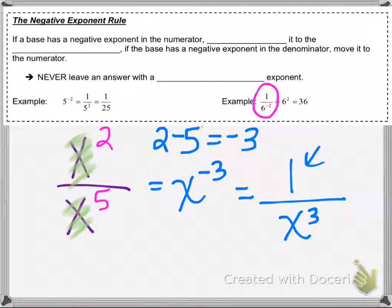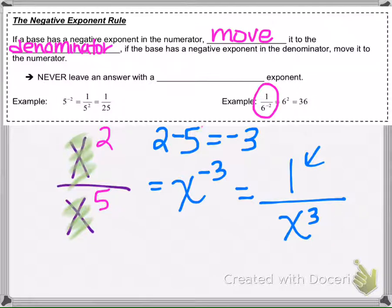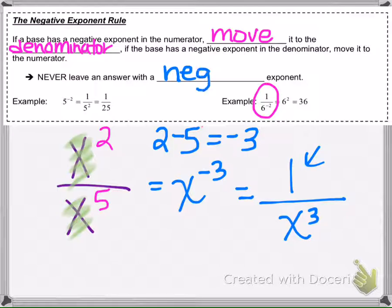What do we do? Here's the rule. If a base has a negative exponent in the numerator, we're going to move it to the denominator. However, if the base has a negative exponent and it's already in the denominator, we're going to move it to the numerator. We can remember it as: if there's a negative exponent, it's going to move locations. And we're never going to leave our answers with a negative exponent — when you circle your answer, it should never have negative exponents. We're going to move them.